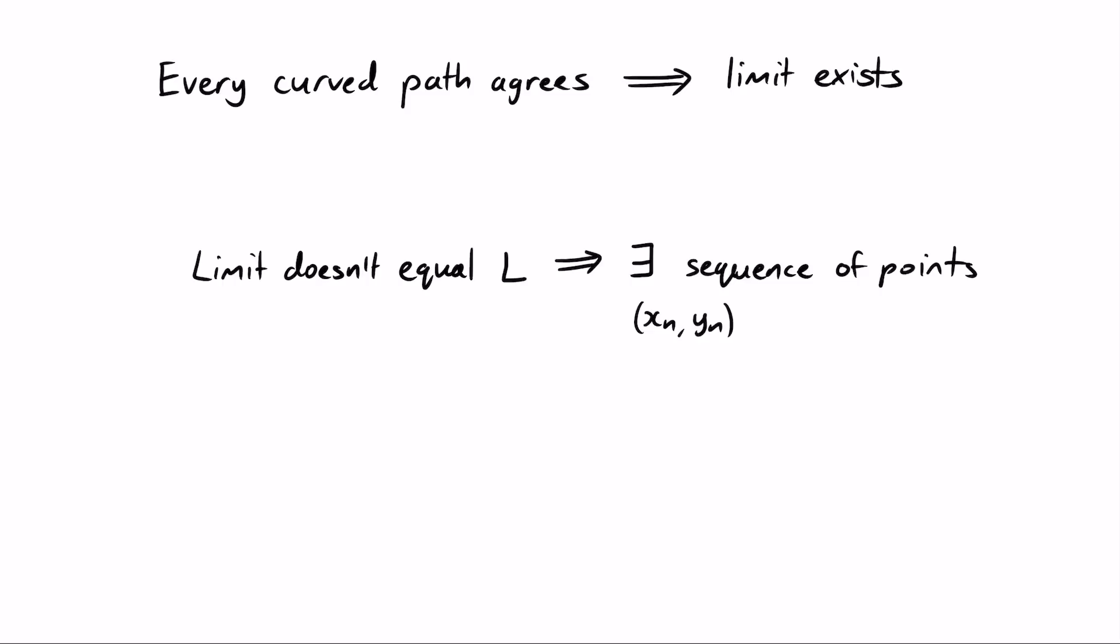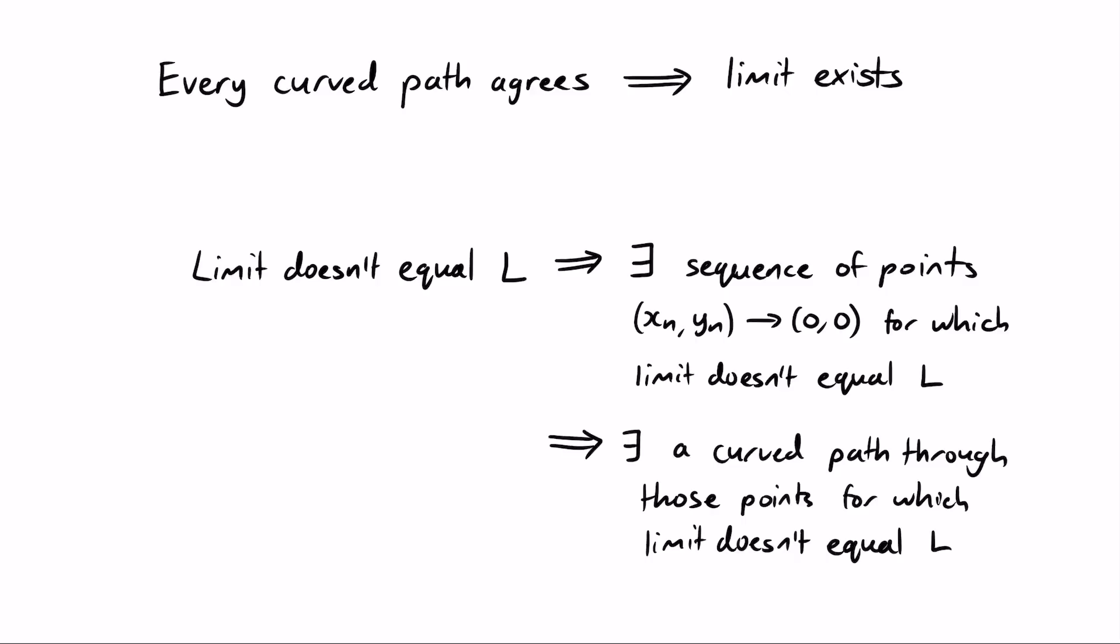You might now be thinking, what if you check every curved path? It turns out checking every continuous curved path is enough to prove that the limit exists. Specifically, if the limit doesn't exist, then there must be a sequence of points approaching 0, disagreeing with the limit, and we can just draw a curved path through them. Probably the best way to check every path at once would be to convert to polar coordinates and allow the angle to be an arbitrary function of the radius.